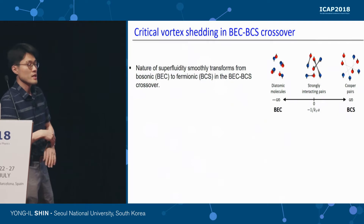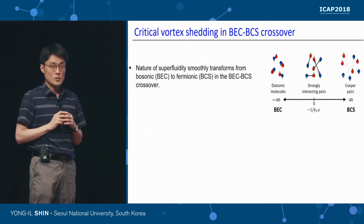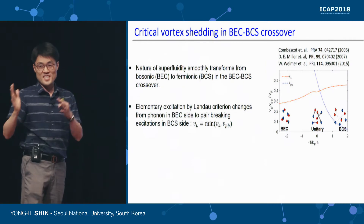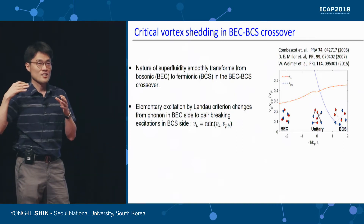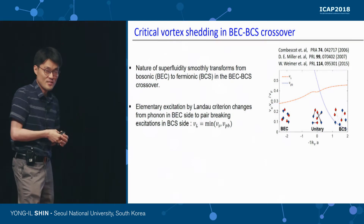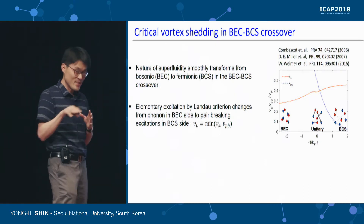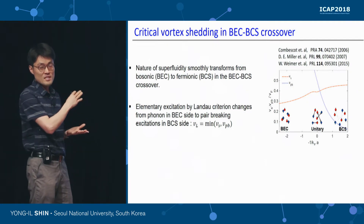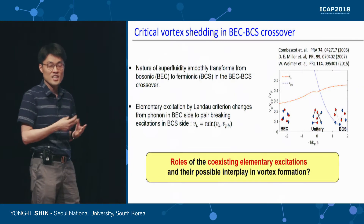In that situation, the strongly interacting Fermi gas gives us a nice opportunity to study the microscopic aspect of vortex nucleation. In this system we can address the BEC-BCS crossover regime, where the Landau critical velocity clearly changes from a phonon nature to a pair-breaking nature. On the BEC side, the responsible microscopic excitation is the phonon, but on the BCS side you have a pair-breaking mechanism. By studying quantum vortex shedding over this BEC-BCS crossover regime, we might have a chance to verify the local Landau criterion description.